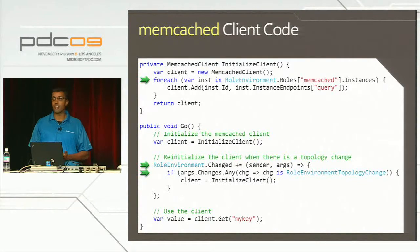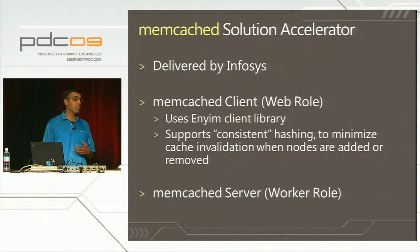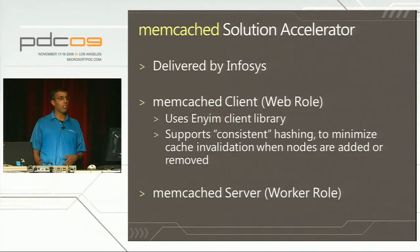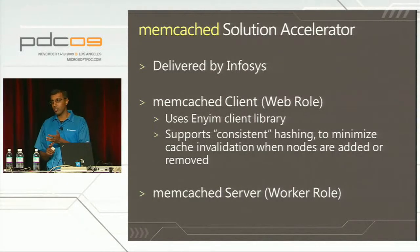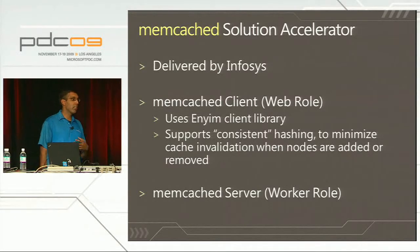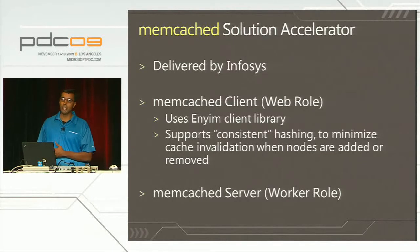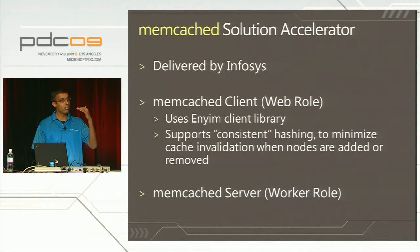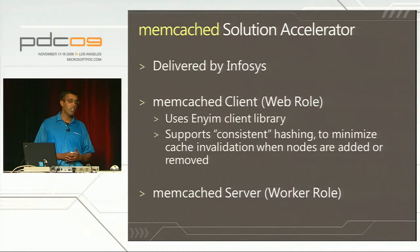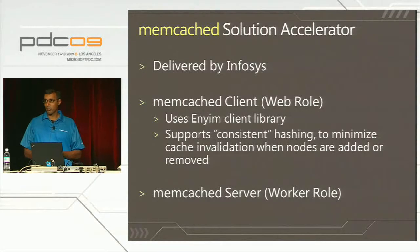Our partner Infosys has built a solution accelerator for Memcached that streamlines this even further. The accelerator contains a solution with two projects - the server side and an example client side. One interesting addition is they use a special client library called Enyim, which is designed ideally for cloud scenarios. It uses something called consistent hashing, which minimizes cache invalidation when new nodes are added or removed - an ideal algorithm and client library to use with Memcached in a cloud environment.